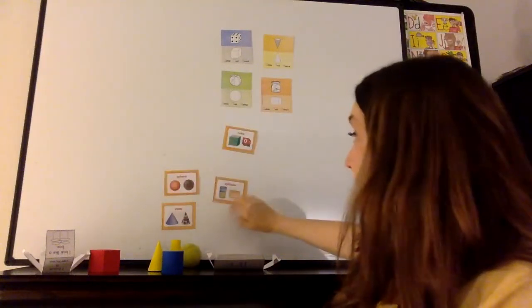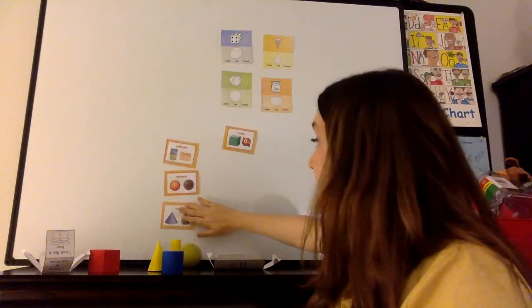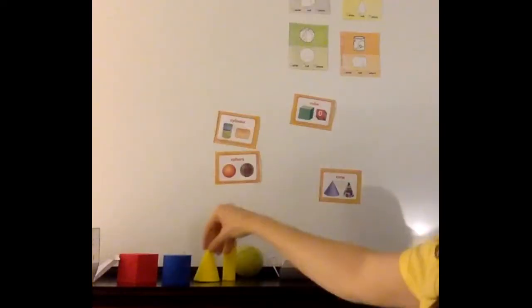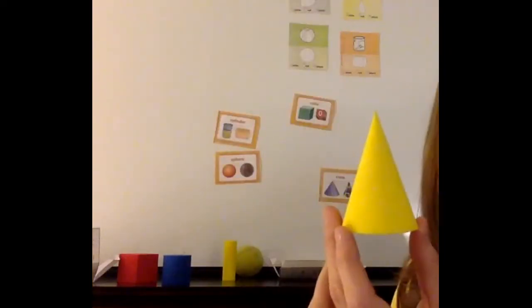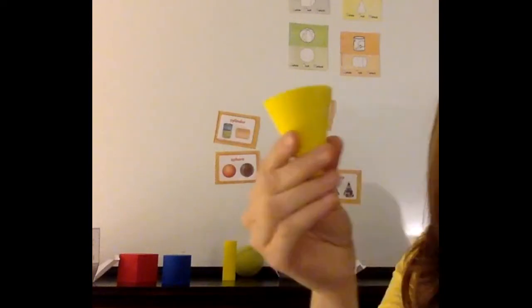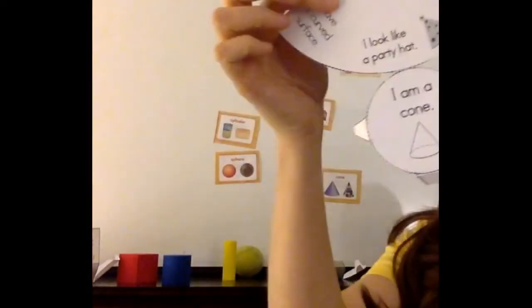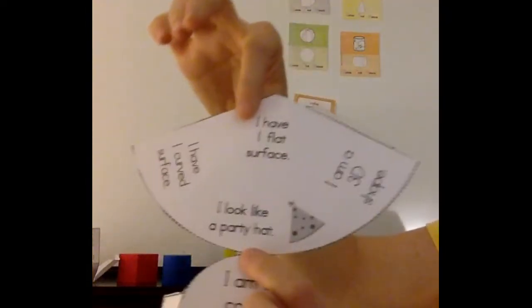All right. That leaves us with a cone. So let's look at the cone. First, here's my cone. And then let's learn about a cone. All right. It says, I am a cone. I look like a party hat.